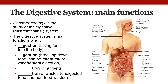The digestive system has four major functions. The first one listed here is ingestion. Ingestion is just taking food into the body, and this occurs at the oral vestibule and the oral cavity.